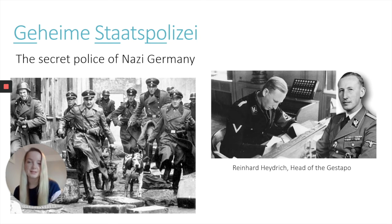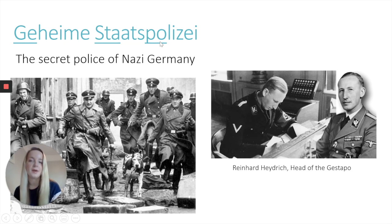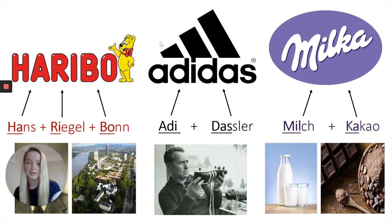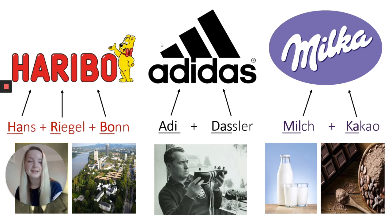The word Gestapo comes from Geheime Staatspolizei, which translates to 'secret state police,' and this opens up a really interesting feature of German. Different parts of each word are taken to form the word Gestapo, so it's a shortened version of the full word. There are many other familiar brands that do this too. For example, the sweets company Haribo is taken from the name of its founder Hans Riegel and the place where it was first made, Bonn, to make the word Haribo. In the same way, Adidas is comprised of the name of its founder Adi Dassler, and Milka, the chocolate brand, is made up of the two words for its main ingredients.